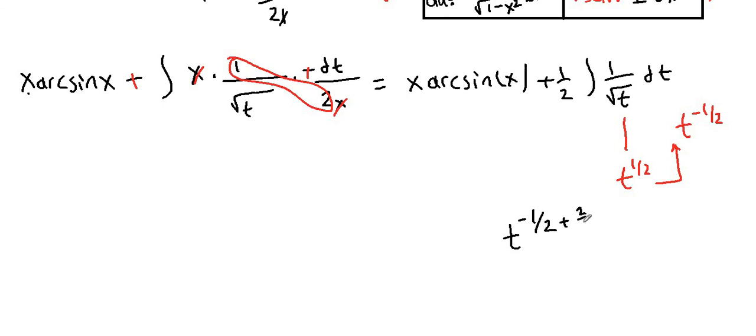Add 1 to the power and divide it by the power. It is t to the 1 half over 1 half. And this 1 half cancels the 1 half in front of the integral sign.